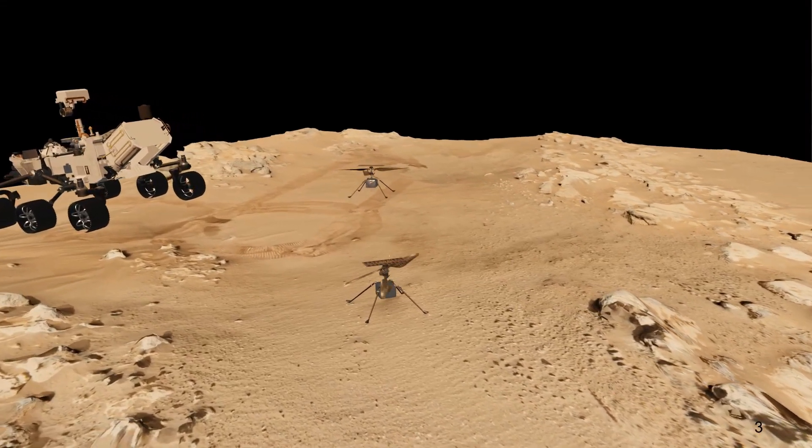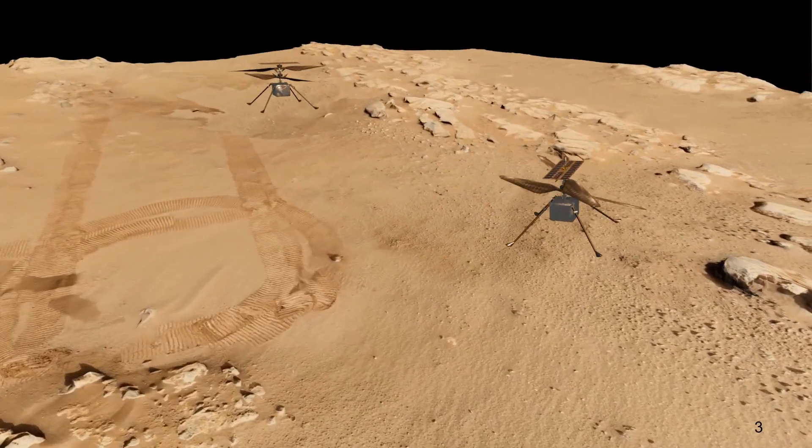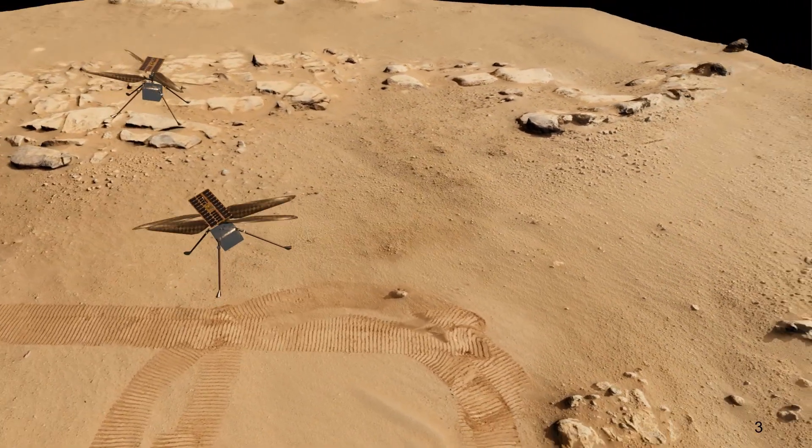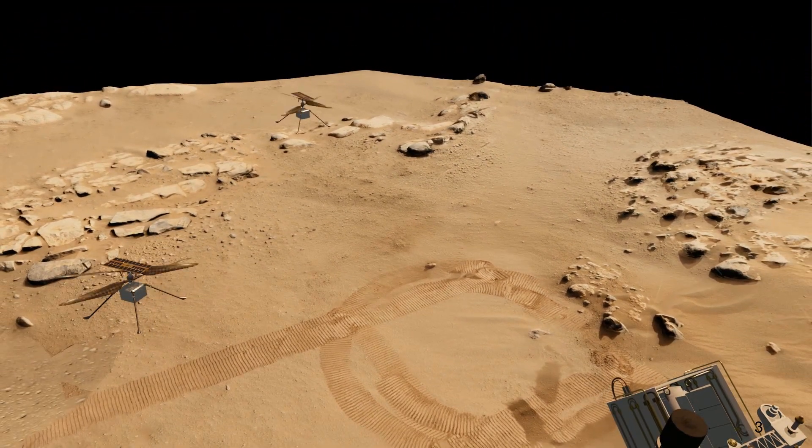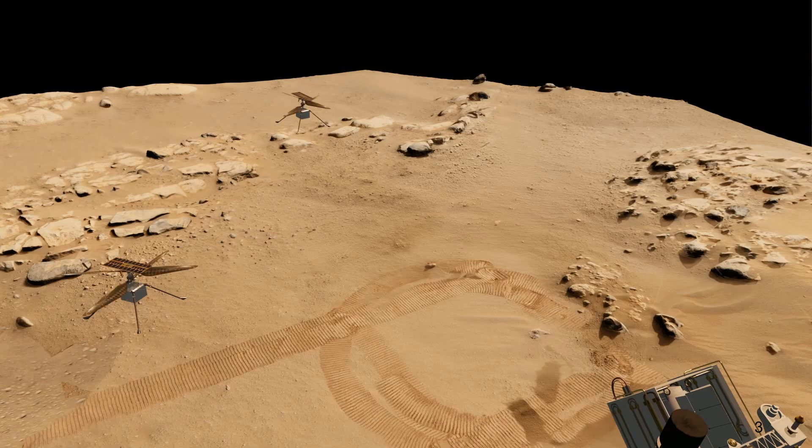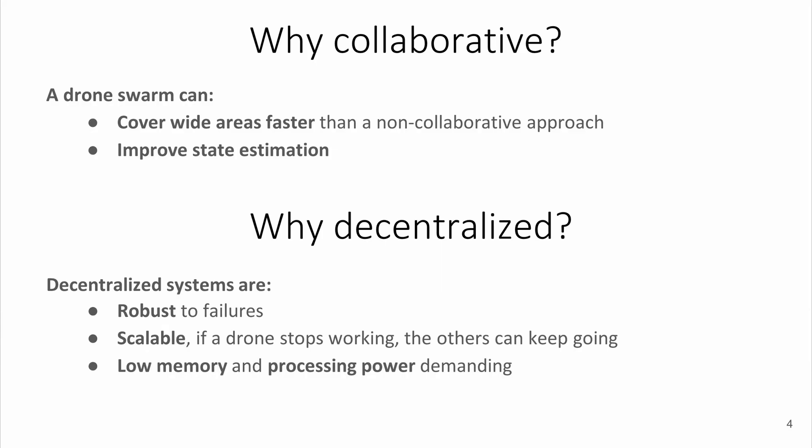Last year, NASA successfully deployed the first helicopter on another planet. We want to show that having multiple drones collaborating helps in mission accomplishment and environment understanding. A drone swarm can explore vast areas faster than a single agent, so that tasks like exploration can be achieved in a shorter time, also impacting energy efficiency.